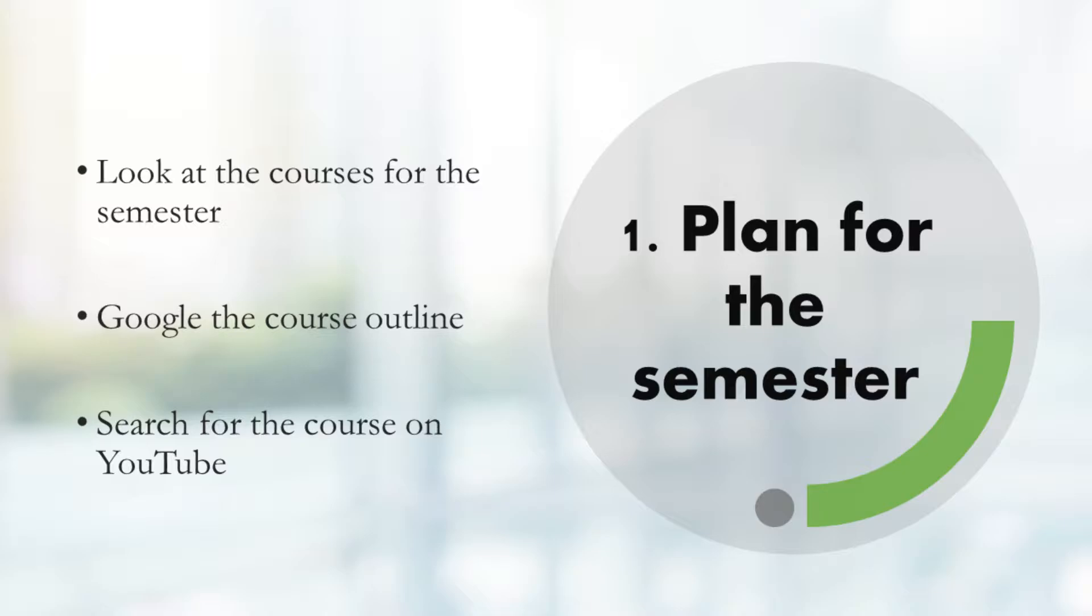The next thing you can do is Google the course outline. Most course outlines are pre-designed by your education department. You can simply type course outline and enter your program, and it will give you a consolidated curriculum of that specific degree. Even if you don't have that entire curriculum available, you can always type course outline with the course name.